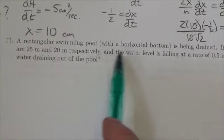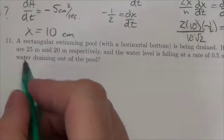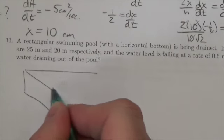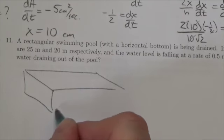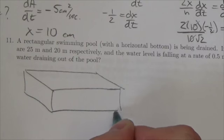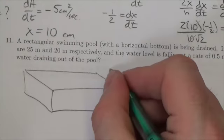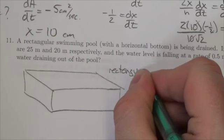It says a rectangular swimming pool with a horizontal bottom. Okay, let's just draw that out here then. Here's our pool with a horizontal bottom. Basically what we're being told here by that statement, a horizontal bottom, is that this is going to be a rectangular prism.